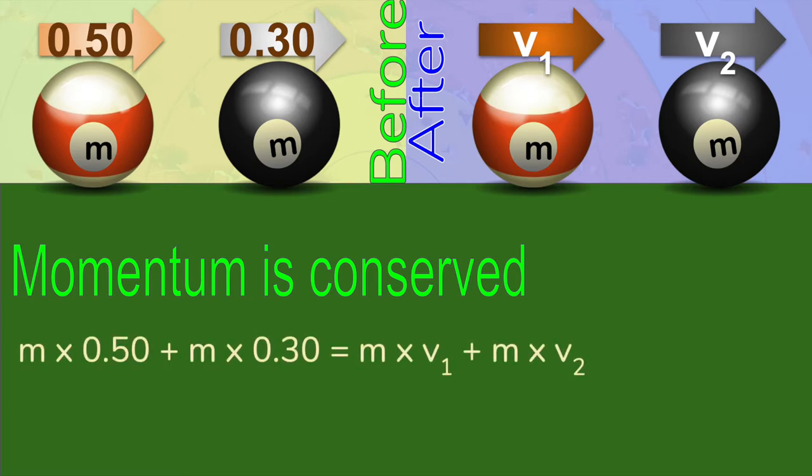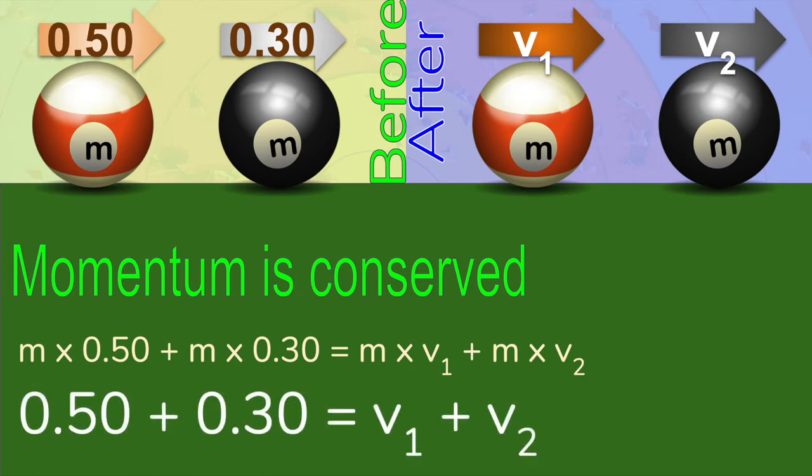You may remember that the best way to work with momentum is to think about the before and after situations. So this is the formula for the conservation of momentum in the collision. And since M is present in every term, you can also write the formula like this. And you may also realize that we cannot solve the equation because there are two variables. We need a second equation, and we do this using kinetic energy, which we have been told has been conserved in this collision.